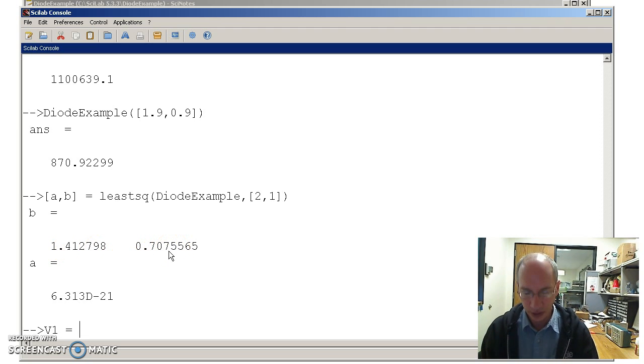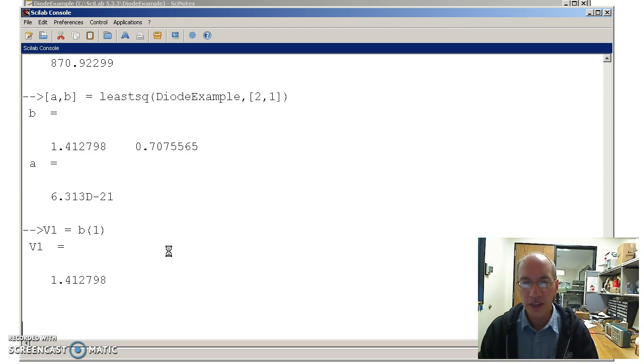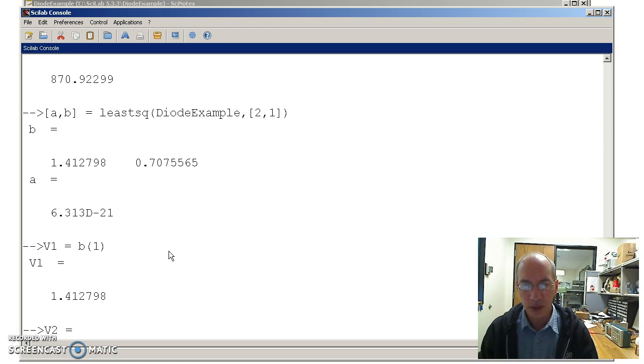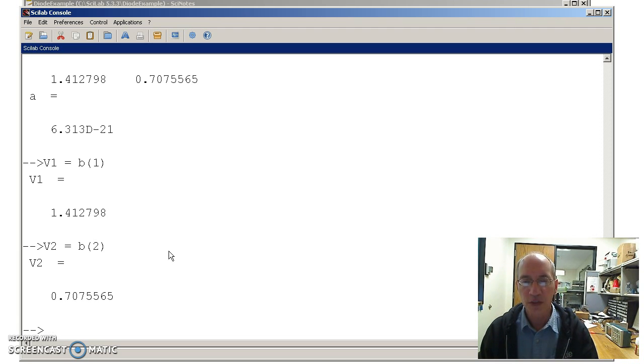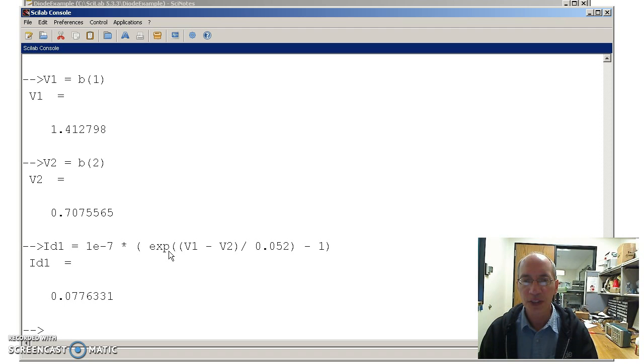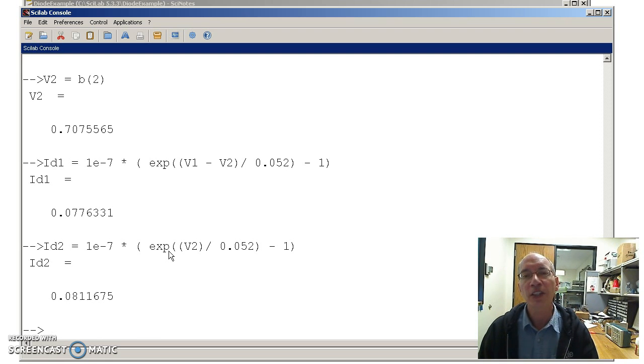So V1 is the first one. Here's V2. I can now find the current through the diode. Using the arrow up arrow down command, I know V1, V2. The first diode is 77 milliamps. V2, arrow up, is 81 milliamps. That's how to use Scilab and the function least square to solve n equations and unknowns, in this case the diode example.